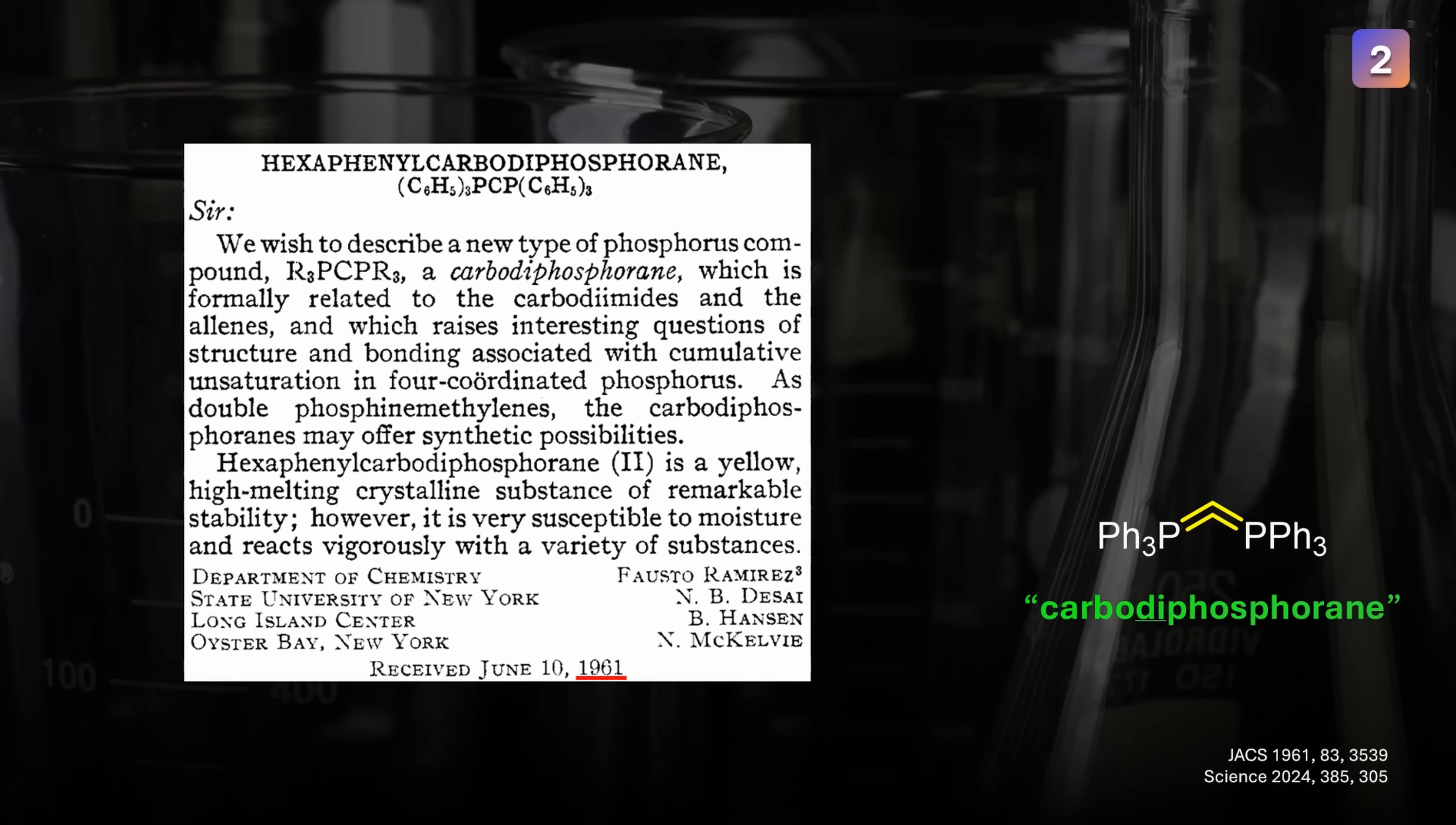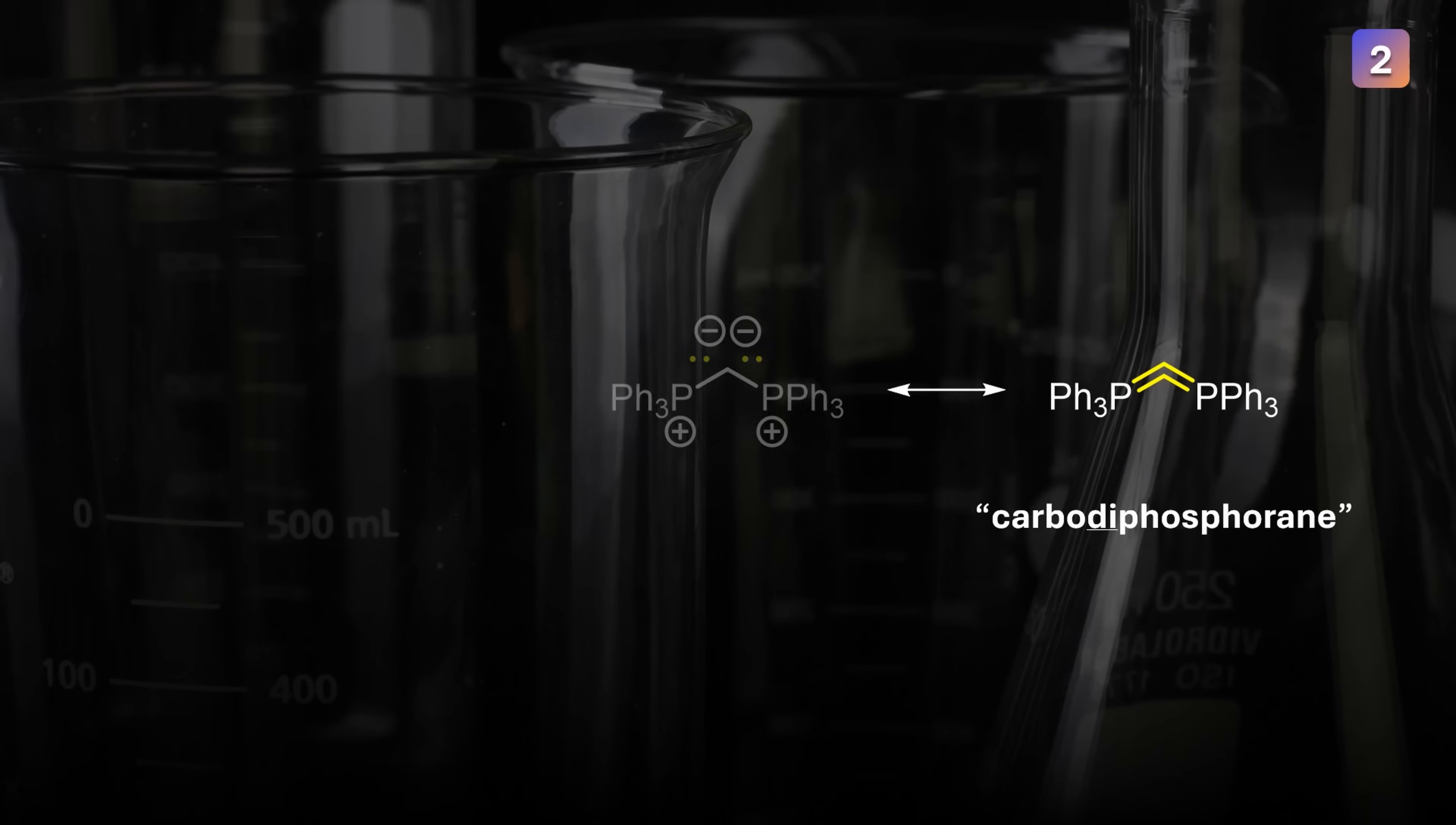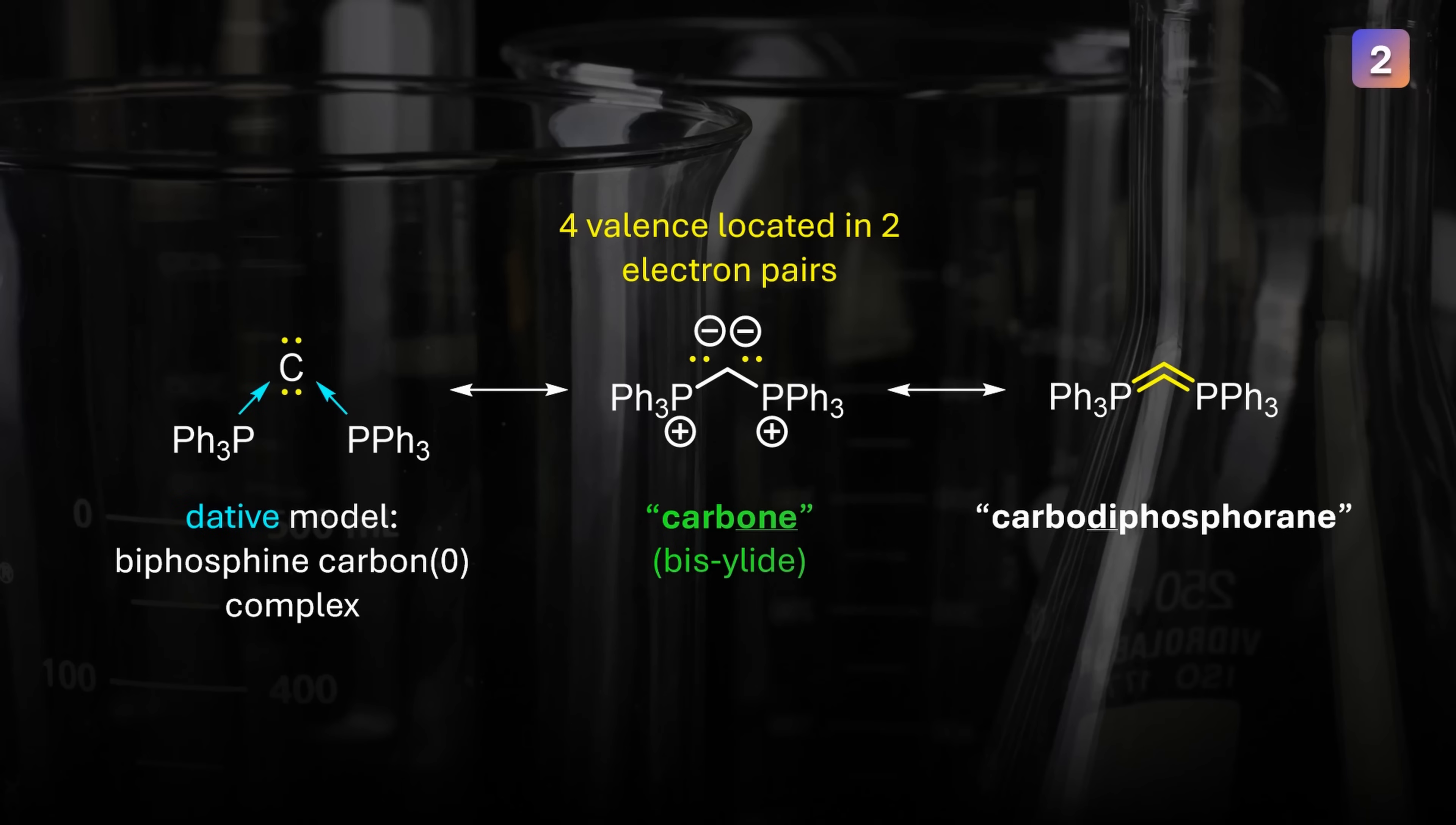This molecule has been known since the 1960s and is indefinitely stable under an argon atmosphere. But it looks kinda crazy, doesn't it? Just like a Wittig reagent has an ylid resonance structure, this one is kinda like an ylid squared, also called a carbone. The formal oxidation state of carbon is zero with all four valence electrons in the unbonded electron pairs, forming two negative charges. In some strange sense, this can even be described as two phosphine ligands donating electron density to a carbon zero atom, like in a metal complex. Keep this in mind as we will get into more funny structures later.